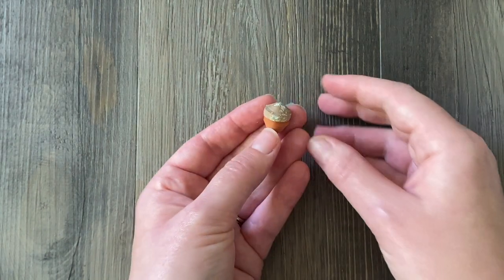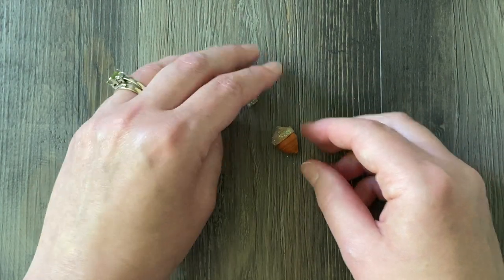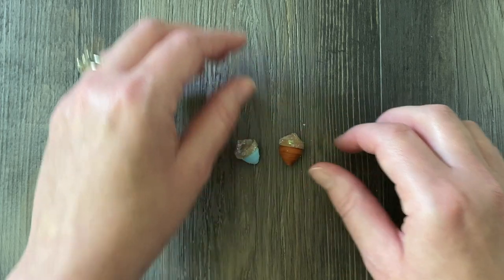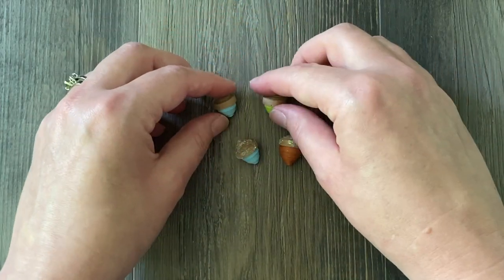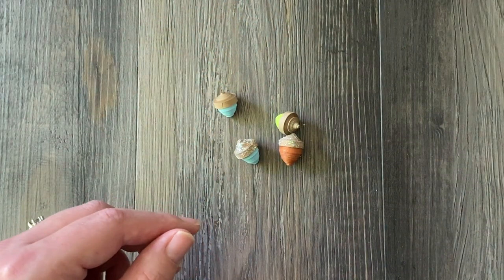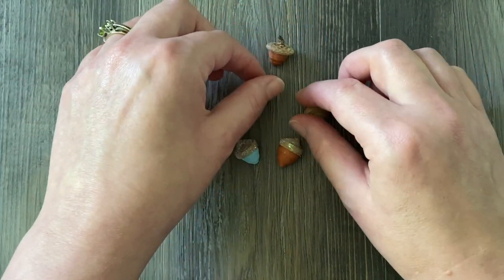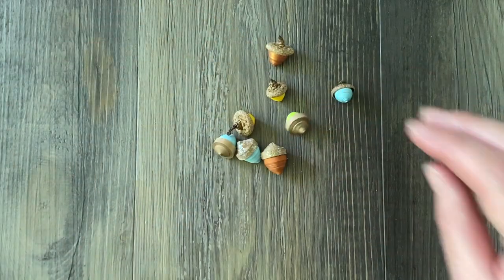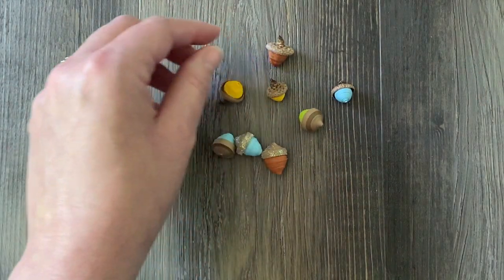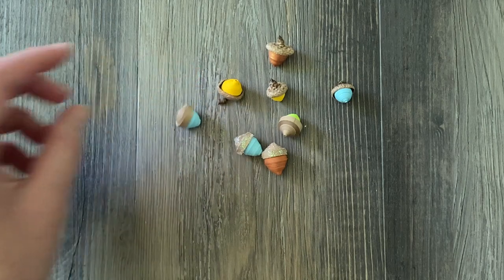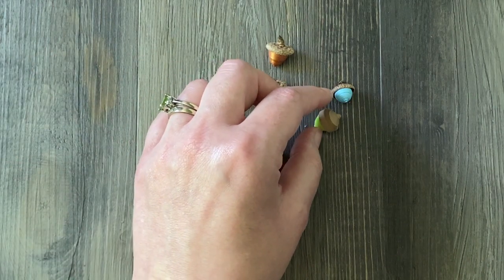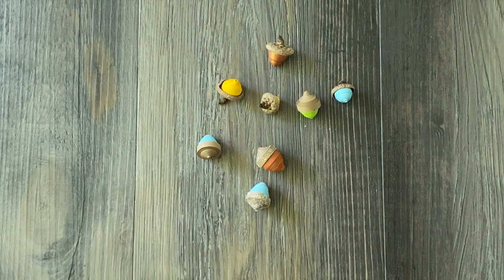I put a little bit of glitter glue and then some sprinkle glitter and then a little bit more glitter glue. So they are a little on the messy side. Probably just would have not done the sprinkle glitter and just done the glitter glue or mix them together before I applied them. Would have been a better way to go. But here is a whole bunch of different quilling paper acorns.